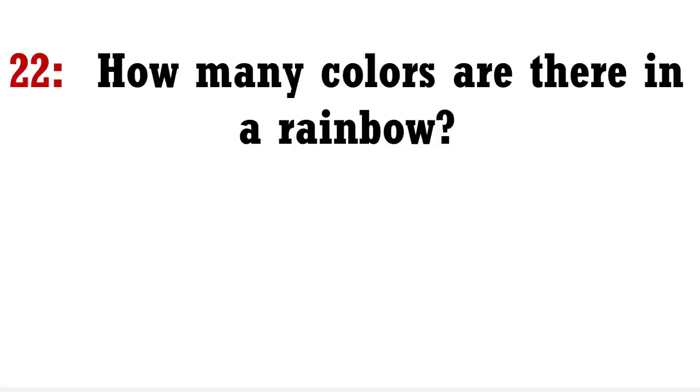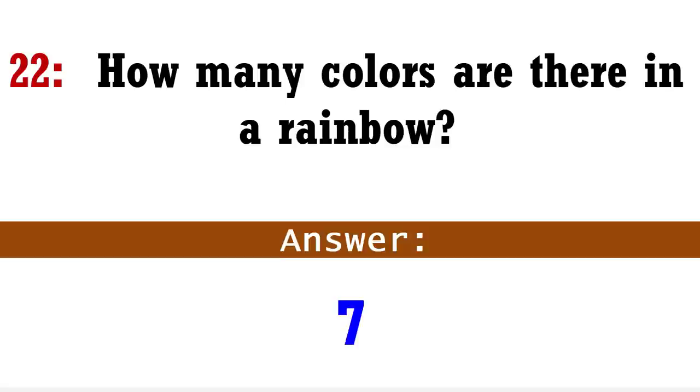Answer: 52. How many colors are there in a rainbow? Answer: Seven.